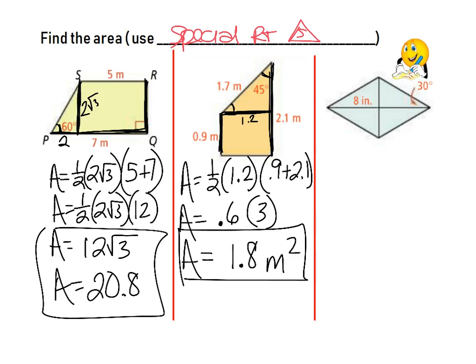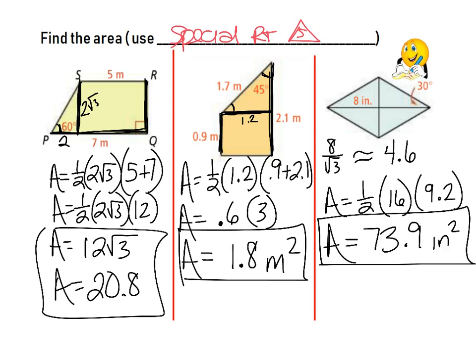Try this rhombus yourself. One half-diagonal is 8, so the full first diagonal is 16. A 30-60-90 triangle is formed; the long leg is 8, so divide by √3 to get the short leg ≈ 4.6. The full second diagonal is about 9.2. Area equals one-half times 16 times 9.2 ≈ 73.9 square units.